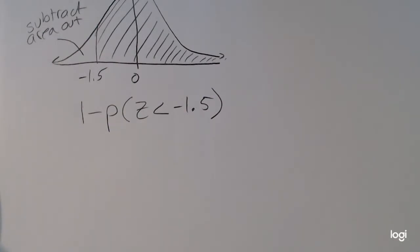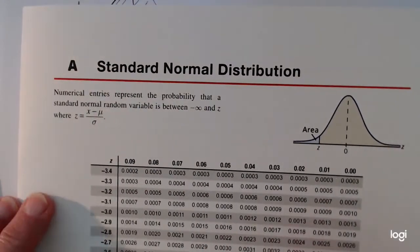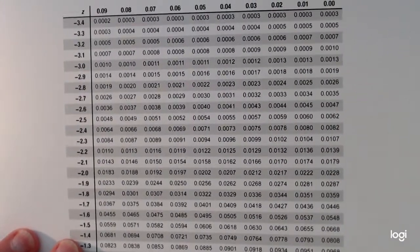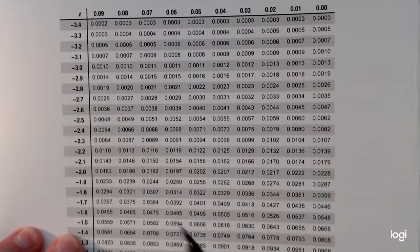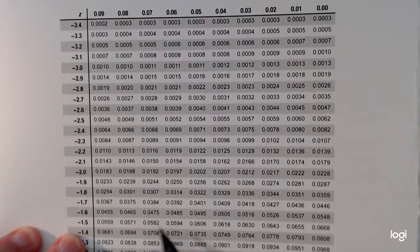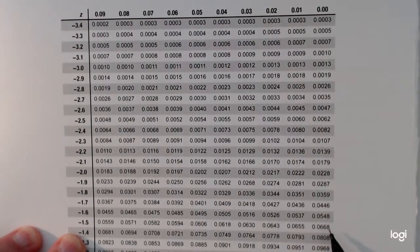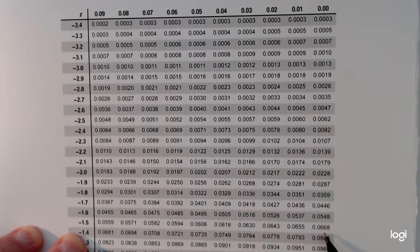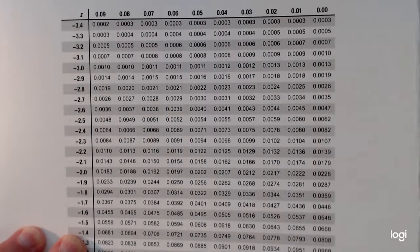All right, so going to my standard normal table, reading down to negative 1.5. That would be negative 1.50 on this table, and then over to 0.00. That tail region will be 0.0668.